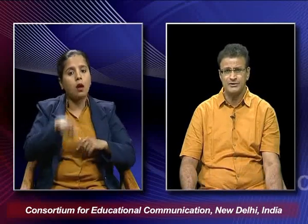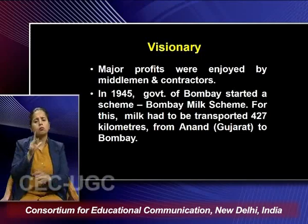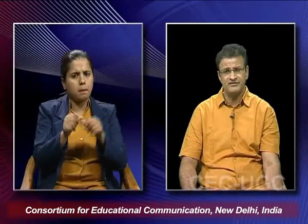In 1945 the Government of Bombay started a scheme called the Bombay Milk Scheme, for which milk had to be transported 427 kilometers from Anand, Gujarat to Bombay. Patel realized that transporting milk over this distance required investment in transport, raising the price of milk. The milk had to be pasteurized in Anand, and for the continuation of supply the Government of Bombay entered into an agreement with Paulson Limited, which was entrusted with this task.